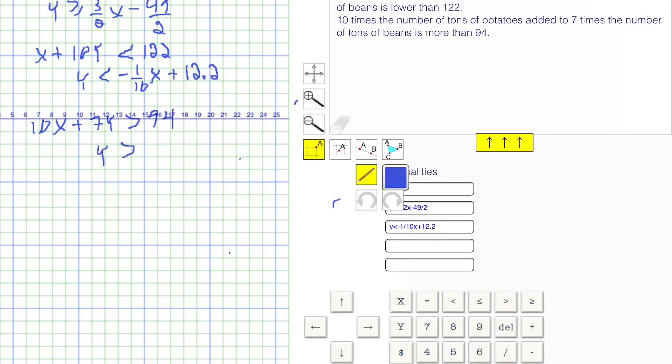y is greater than minus 10 over 7x plus 94 divided by 7. 7 doesn't go evenly into 94. y is greater than negative 10 sevenths x plus 94 over 7, and enter.